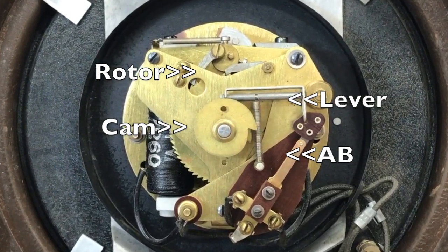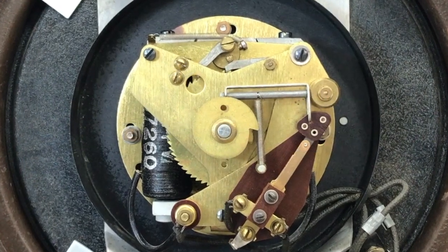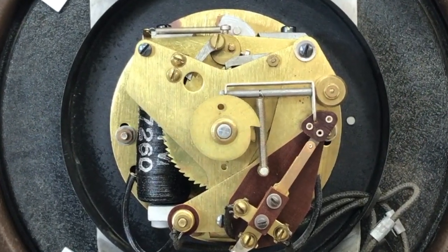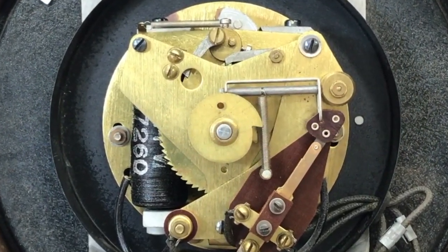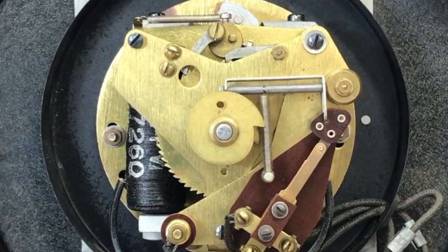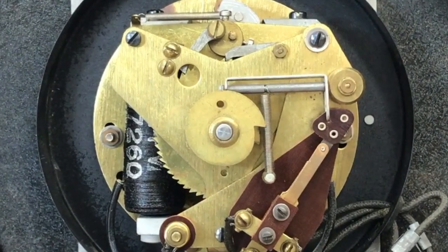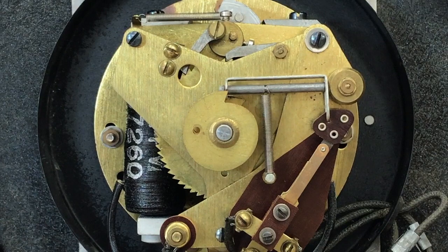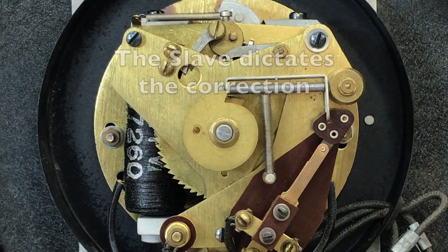A rotor receives an impulse from the master and rotates. When the rotor returns it moves a minute hand as the cam on the center shaft turns. Now comes the most significant part of the correction process.